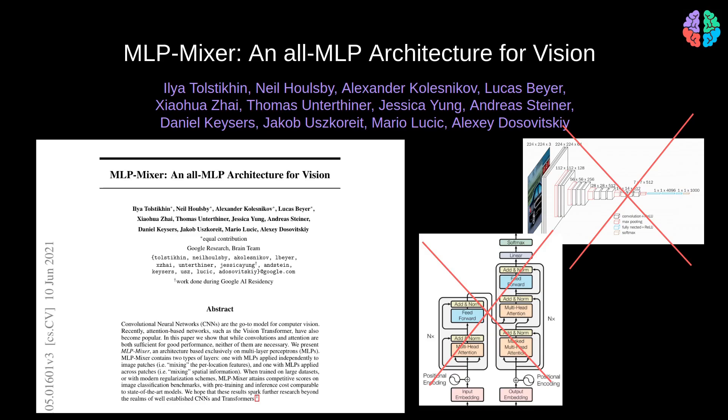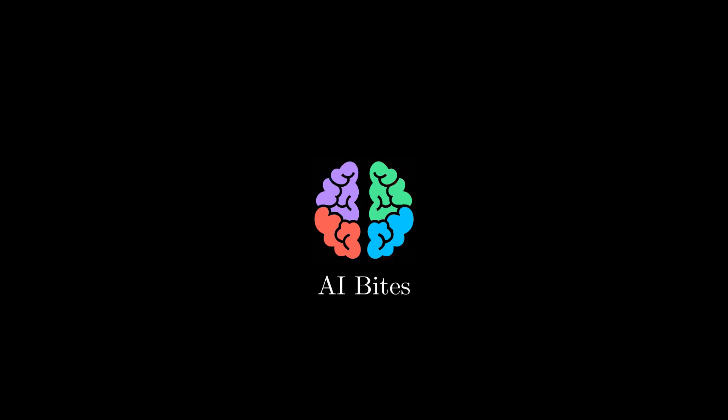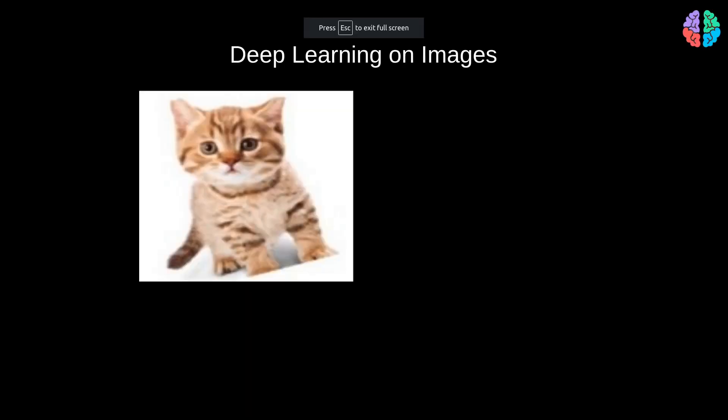Let's have a look at MLP mixer in this video. When we do deep learning on images, the most obvious choice is convolutional neural networks or CNNs. CNNs do two things: first, they mix features between spatial locations.